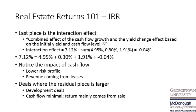The last piece is the interaction effect, which is simply the combined effect of cash flow growth and the yield change effect based on the initial yield and cash flow level. The interaction effect is determined by subtracting the sum of the year one cash return, the change in cash flow, and the change in residual value from the 7.12% IRR, which results in a negative 4 basis point interaction effect.